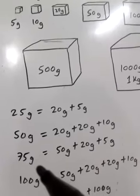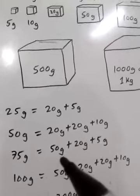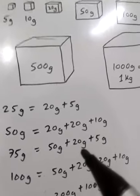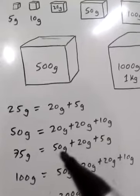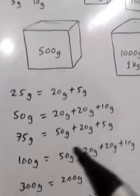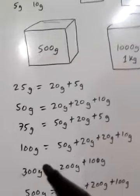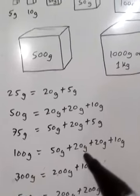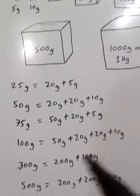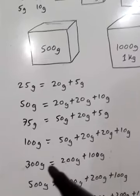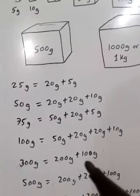To weigh 75 gram, if we don't have a 75 gram weight, we can use combinations. To weigh 100 gram, if we don't have a 100 gram weight, we can use 50 plus 20 equals 70, plus 20 equals 90, plus 10 equals 100 gram. For 300 gram, use 200 gram plus another 100 gram.